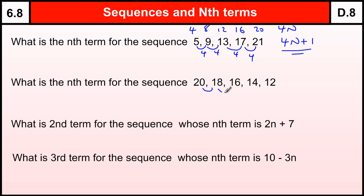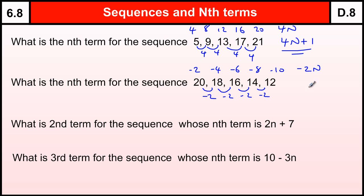This next sequence is going down by 2 each time — minus 2 each time. So in the same idea, we write down the minus 2 times table: minus 2, minus 4, minus 6, minus 8, minus 10. Is there a connection? From minus 2 to 20, I've got to add 22. Adding 22 to minus 4 gives 18, add 22 gives 16, and so on. So this is the minus 2 times table, which is minus 2N, plus 22. That can be left as minus 2N plus 22, or rearranged to 22 minus 2N.